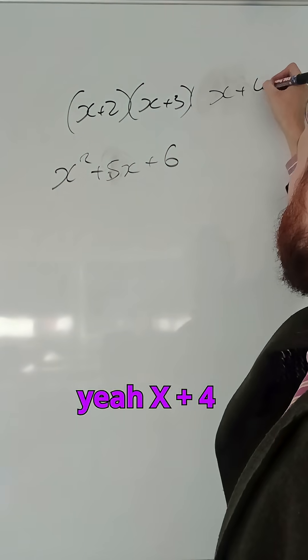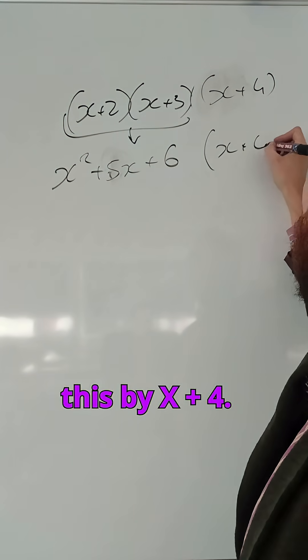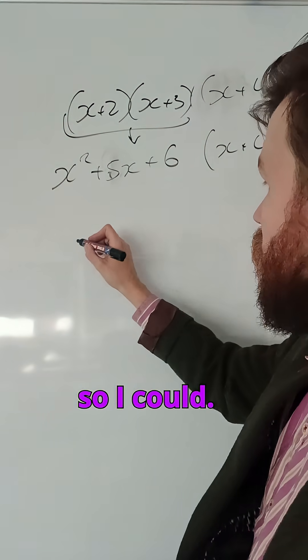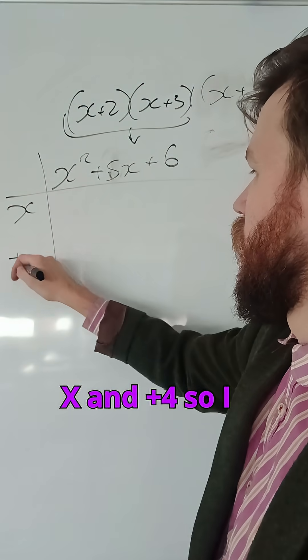Now what was I multiplying that by? Oh yeah, x plus 4, because this is the same as this. So I'm multiplying this by x plus 4. This is where I need my grid. I could multiply it by x and plus 4.